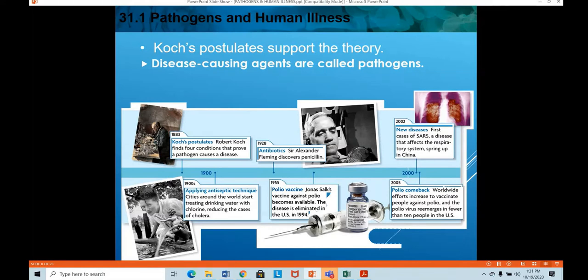Gradually, in 1928, antibiotics were invented. It was Sir Alexander Fleming who first discovered penicillin — an antibiotic with properties of killing or stopping infection in the body. Penicillin is actually a fungus that has the capability of stopping a particular infection or killing those bacteria.